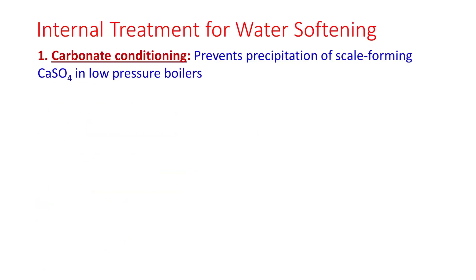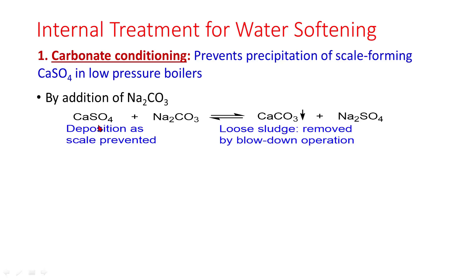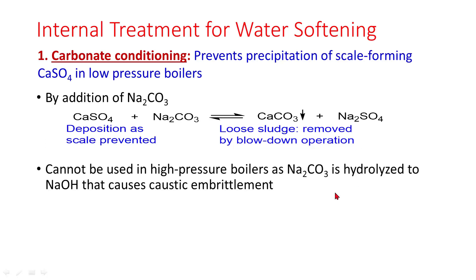Carbonate conditioning prevents precipitation of scale-forming calcium sulphate in low pressure boilers. By the addition of sodium carbonate, calcium sulphate deposition as scale is prevented, which gives rise to calcium carbonate, which is a loose sludge and can be removed by blowdown operation.